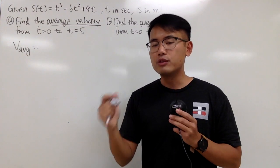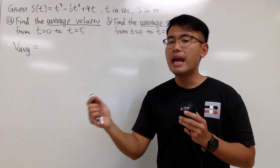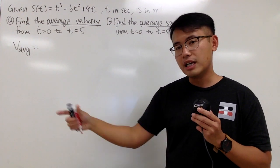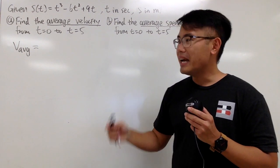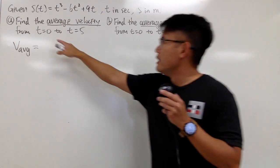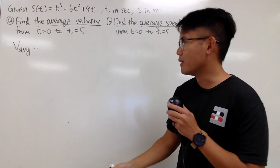And this is how we do average velocity. All we care about is the final position and the initial position, and then we subtract it so we can get the change in position. Then we divide it by the length of the time interval, namely the change in time. That's pretty much it.